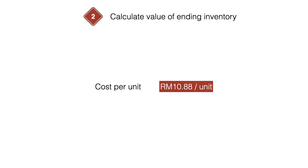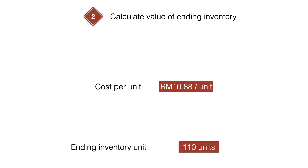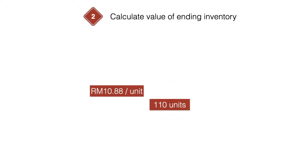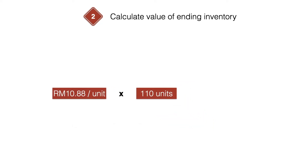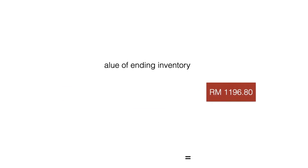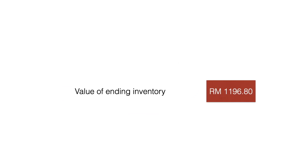We are going to use RM10.88 per unit to calculate the value of ending inventory. We multiply this by the 110 ending inventory units we calculated earlier to get the ending inventory value of RM1,196.80.